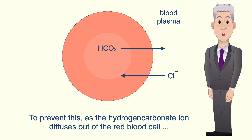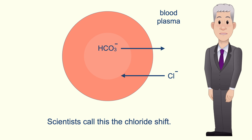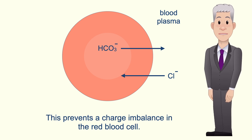To prevent this, as the hydrogen carbonate ion diffuses out of the red blood cell, a negative chloride ion diffuses into the red blood cell. Scientists call this the chloride shift, and this prevents a charge imbalance in the red blood cell.